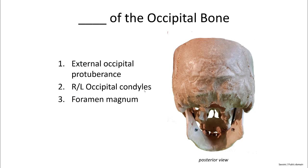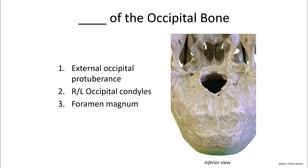The occipital bone has three features you'll need to know. We have the external occipital protuberance — it's the pointy part at the very back of your head. We also have the right and left occipital condyles. Because there is only one occipital bone, right and left refer to the feature: the left occipital condyle of the occipital bone and the right occipital condyle of the occipital bone. And then there is the foramen magnum — that is the hole through which the spinal cord will pass. We can see the foramen magnum much better from this inferior view of the skull.